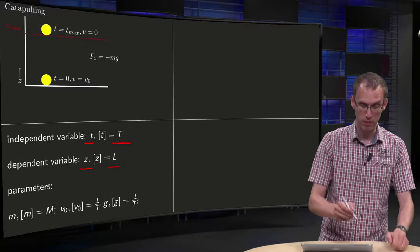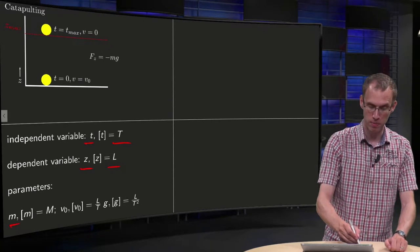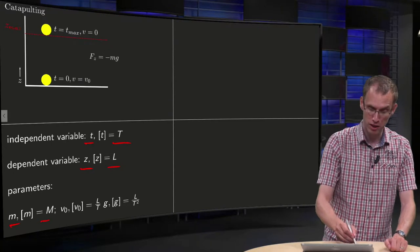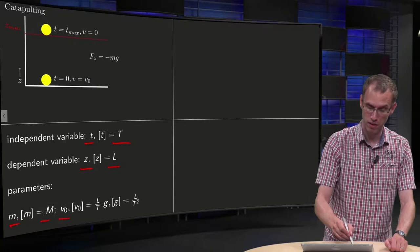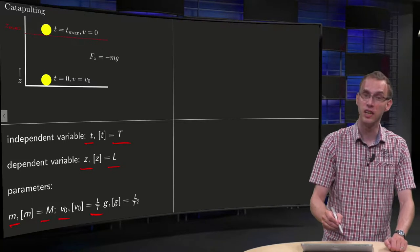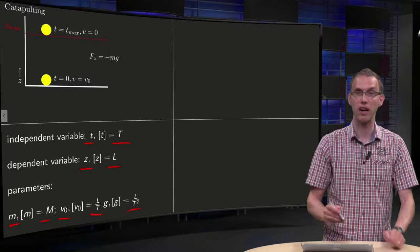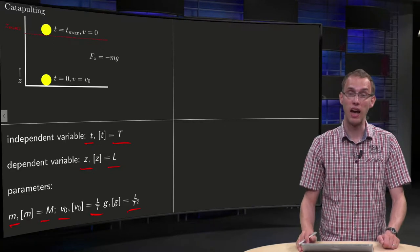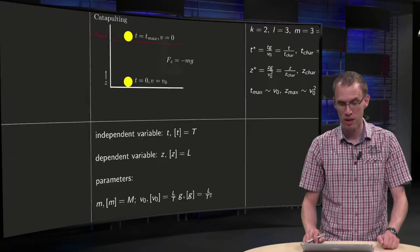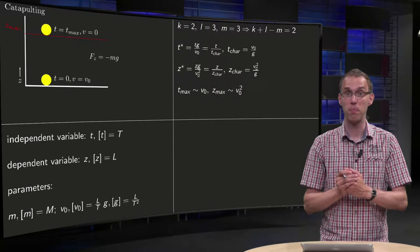And we have a few parameters: m with dimension capital M, v0 initial velocity with dimension L over T, and g constant of gravity with dimension L over T squared.